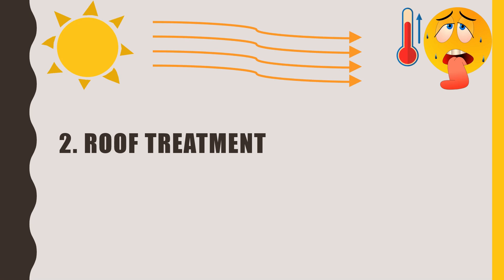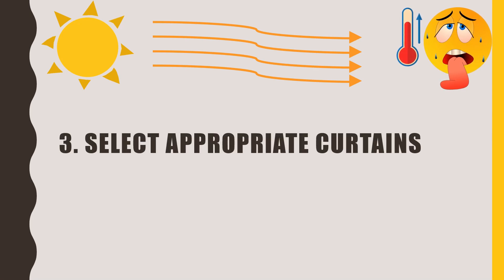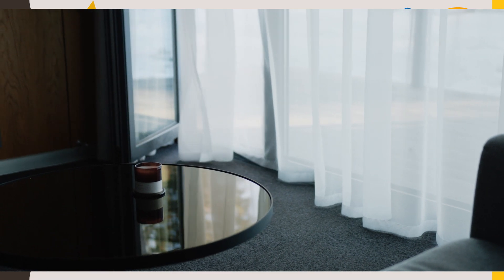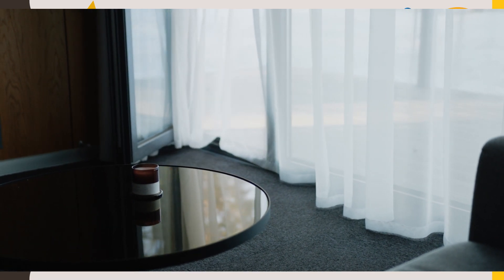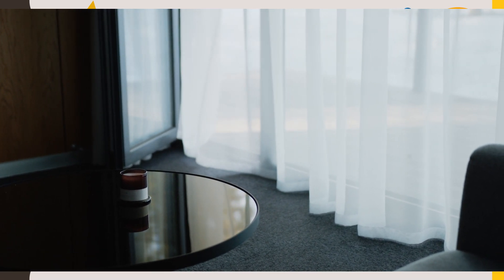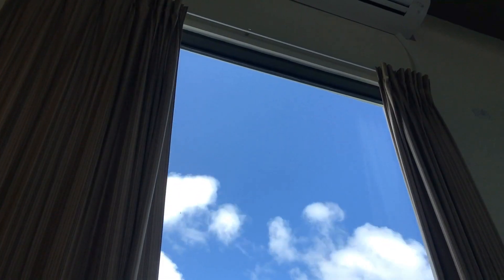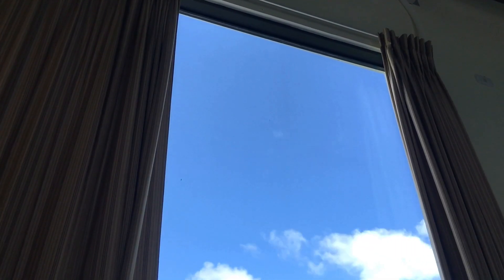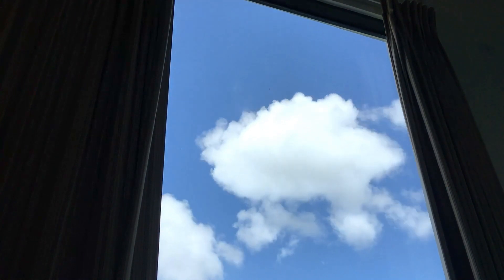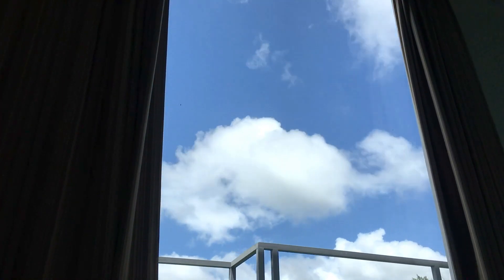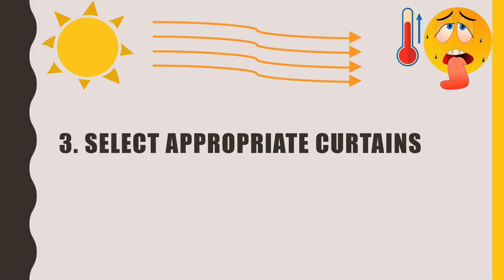Tip number three is to select appropriate curtains. You might be shocked to know that thick and dark-shaded curtains are not good for retarding sunlight entering your house. This is because, compared to any light-colored object, a dark object absorbs more photons — in other words, it absorbs more heat. So we should use curtains made of linen fabric in a light color shade.